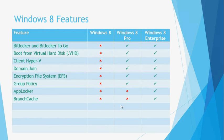The next feature is Direct Access, which is a VPN-style technology that allows computers to automatically connect to a VPN without any input from the user. The Direct Access feature is only available on the Windows 8 Enterprise Edition.